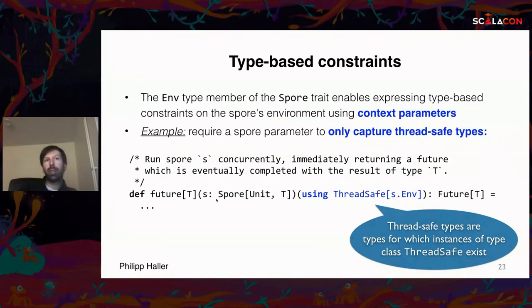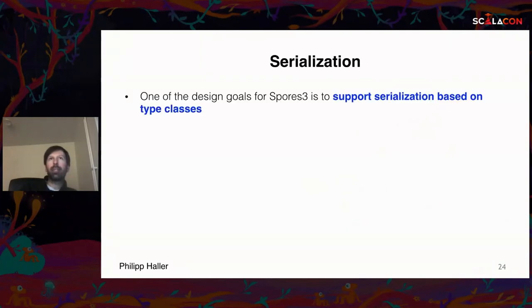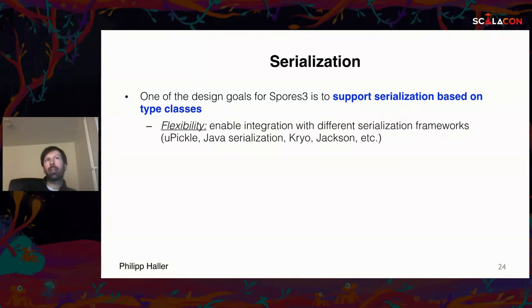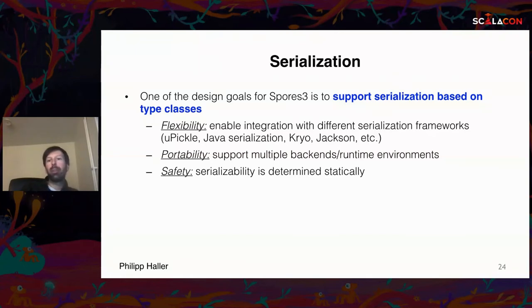This gives a compile-time guarantee that the environment of the spore refers only to thread-safe types. Now let's talk about serialization — another goal — also based on type classes, which makes the design flexible enough to integrate with different frameworks and provides a portable, safe scheme where serializability is determined at compile time. We assume serialization is used primarily for communication between remote nodes, and that every node runs the same code.